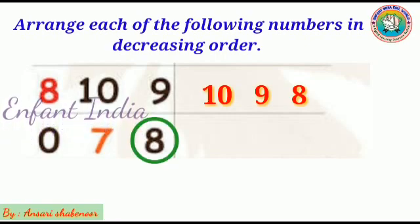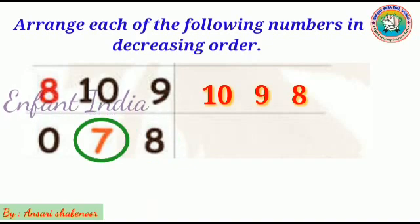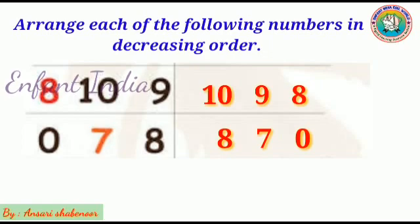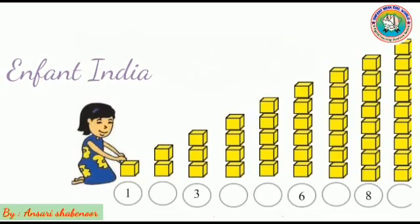8, then 7, and the smallest number 0. So the order is 8, 7, 0.